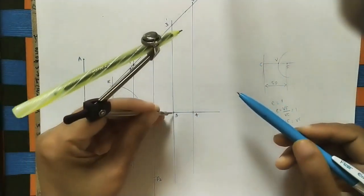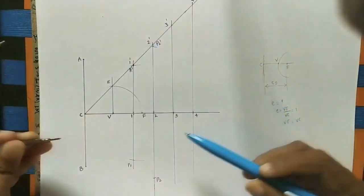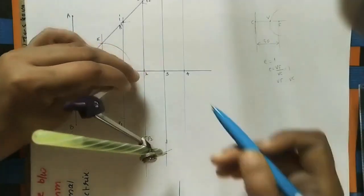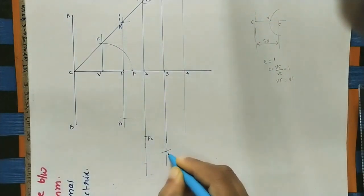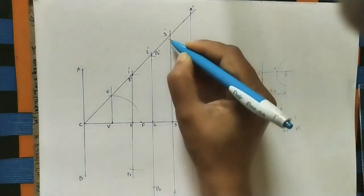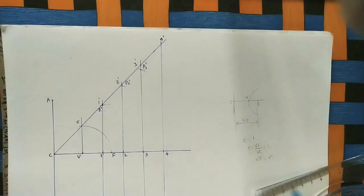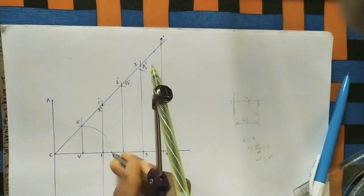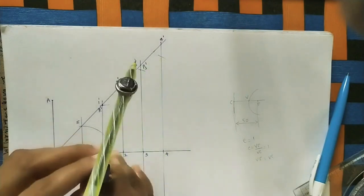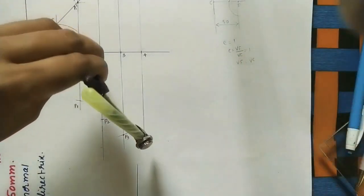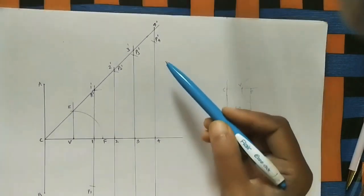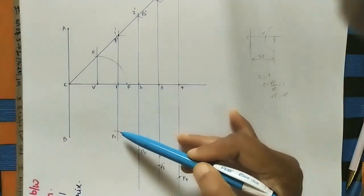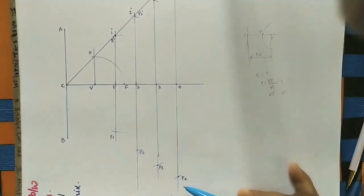The next radius is 3–3'. With F as center, draw an arc on the third line at both sides. Give the names: this is P3 and this one is P3'. The next radius is 4–4'. Using the compass with F as center, draw an arc on the fourth line. Here we get the P4 point and here we get the P4' point. If we join all the P' points through V and the P1, P2, P3, P4 points, we will get the parabola.